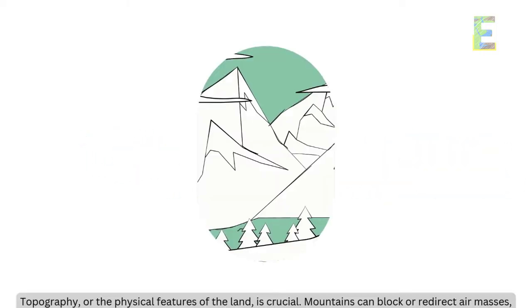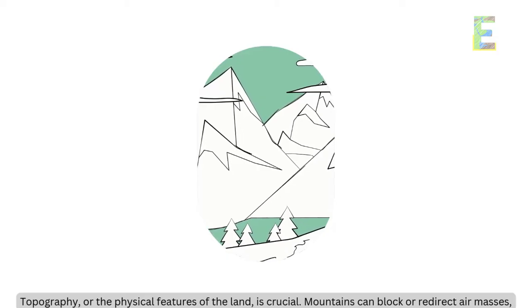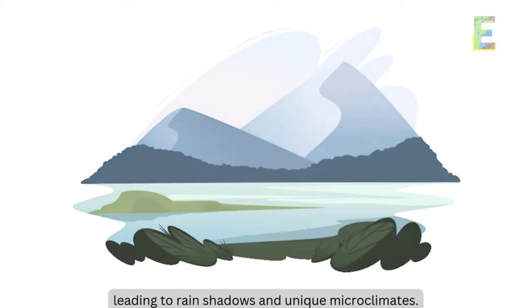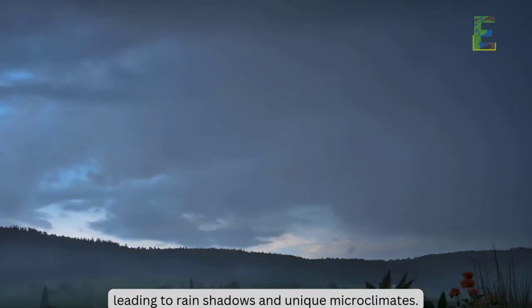Topography, or the physical features of the land, is crucial. Mountains can block or redirect air masses, leading to rain shadows and unique microclimates.